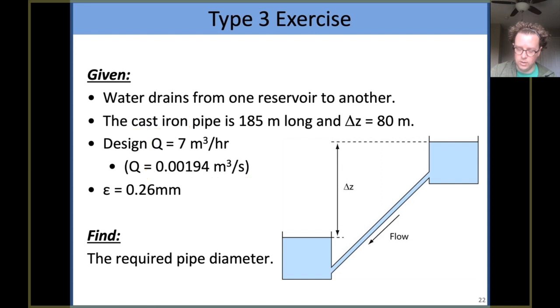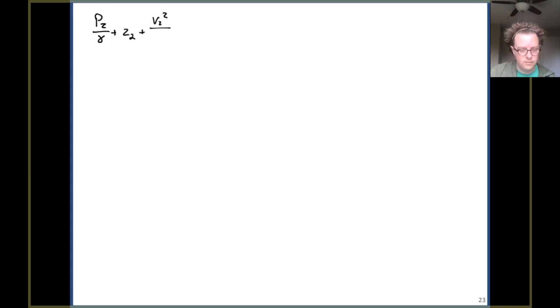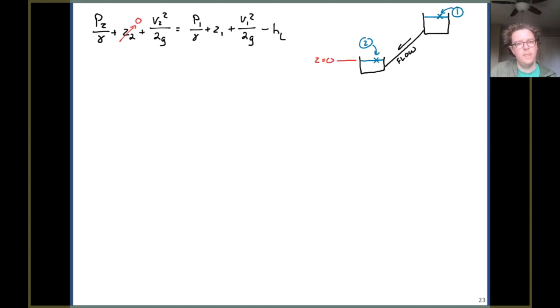Well, at its most basic level, this is an energy equation problem, where where we end up, the left-hand side, equals where we began, the pressure, elevation, and velocity terms for point 1 minus the head loss that happens along the way. So just a quick schematic to show you, I'm going to pick the water surface in the upper reservoir for point 1, and I'm going to pick the water surface in the lower reservoir for point 2. So I'll set my lower datum at a z of 0.